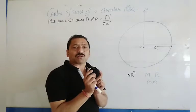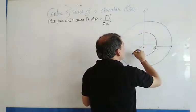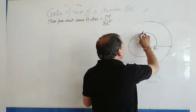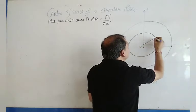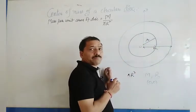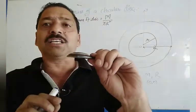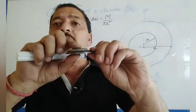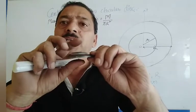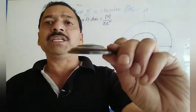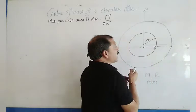We need to consider one such circular ring. This circular ring has a radius of small r. If you look at the disc, this ring has a certain thickness, and the thickness of this ring is represented by dr.